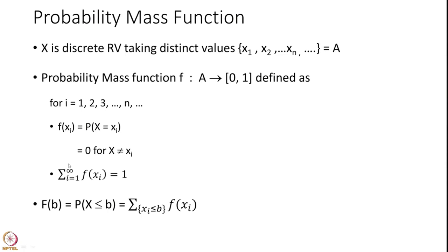The probability mass function: if X is a discrete random variable taking distinct values X1, X2, X3, Xn and so on — remember it is discrete so it takes a countable number of values — the set of all values it takes is called A. Then the probability mass function is a function small f defined from A to [0,1] as: f of Xi equals the probability that X takes the value Xi, and it is 0 if X does not take that value. The summation of f of Xi for all i from 1 to infinity must equal 1.